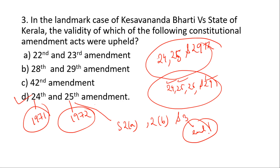The second part of Section 3 of the 25th Amendment Act was declared unconstitutional because it prevented judicial review of any law giving effect to directive principles. The 29th amendment was also part of the case. The correct option includes the 24th and 25th amendments.